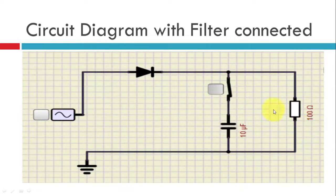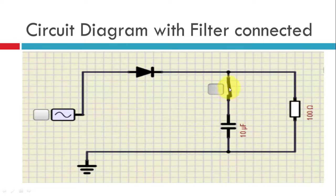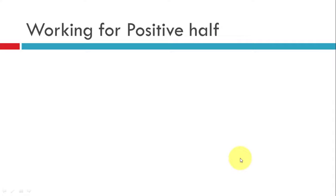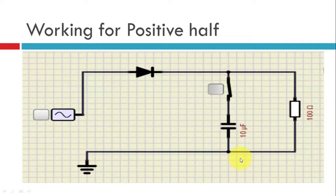This is the actual circuit with filter capacitor. As you can see, this particular switch is closed so it will connect this capacitor. The input will be given — this input is a pure sine wave coming from the AC generator. Now what happens during the positive half?